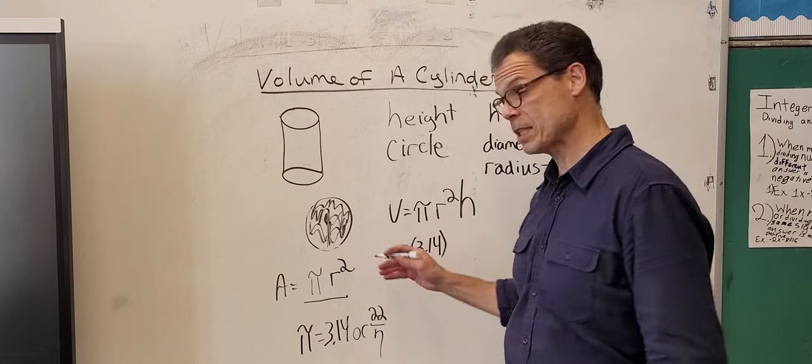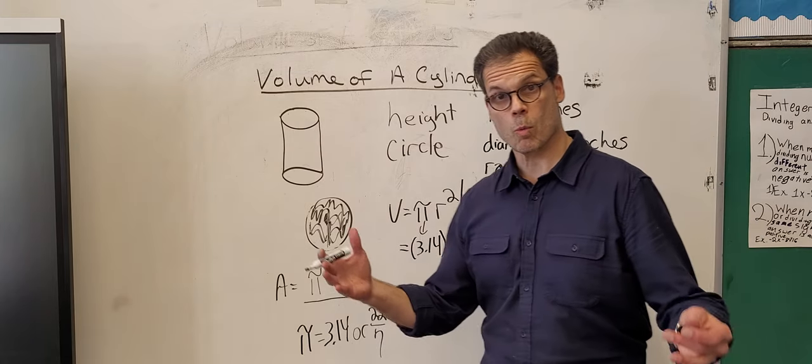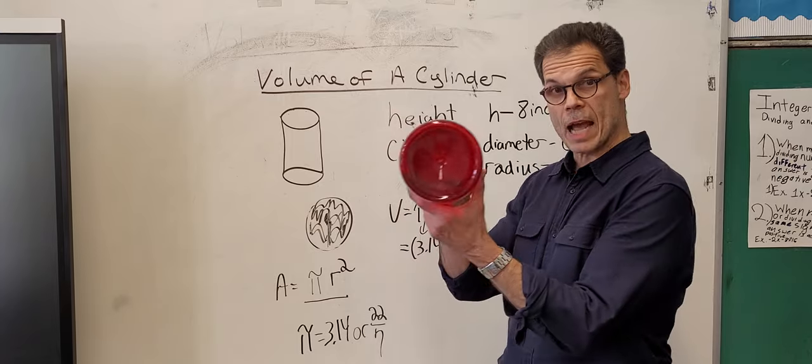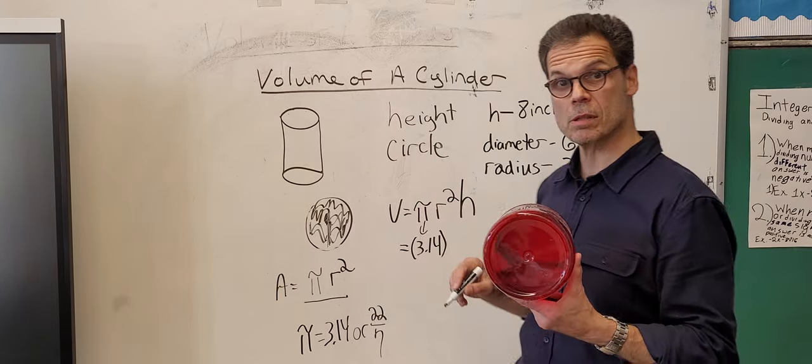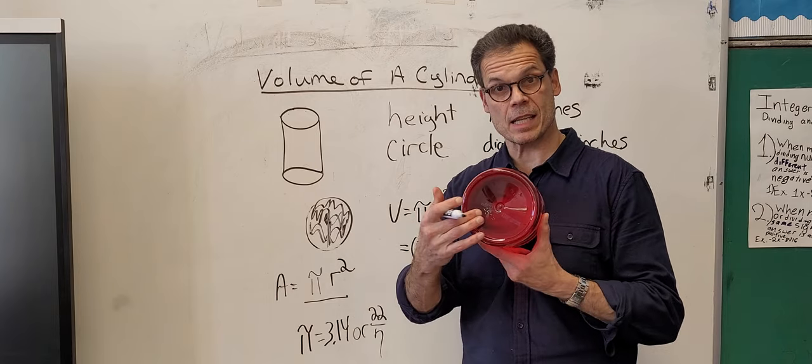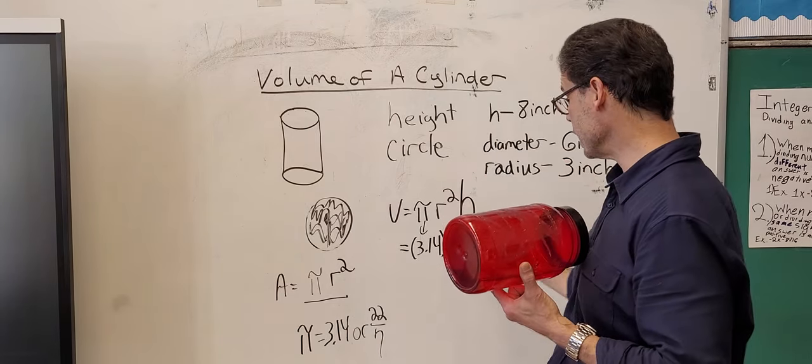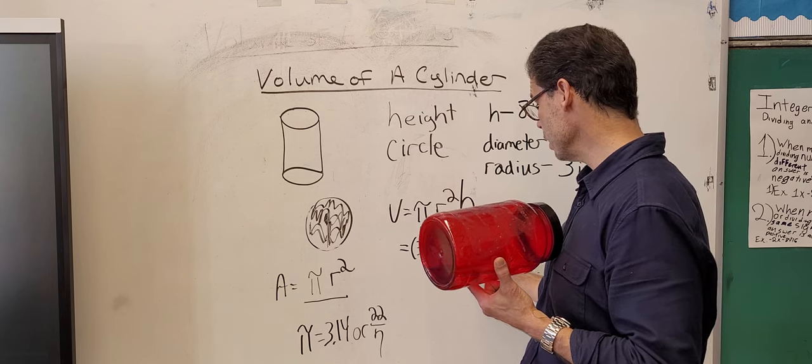What is radius for this? We have the diameter - that was 6. We know our radius is not the full way but half, so half of 6 is 3. So our radius is 3 squared.